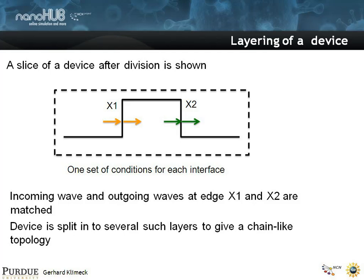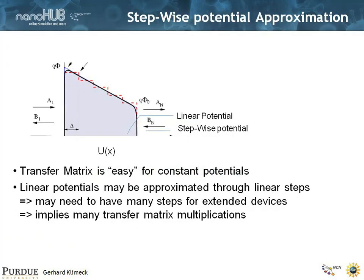At each of these interfaces, you match the wave function and the derivative of the wave function. You can split a device into many such layers. For example, even a barrier material like this, you might split into multiple little steps, approximating linear potentials by some small steps. That means if you have a device that is extended and has potentials varying throughout, you need a lot of steps.